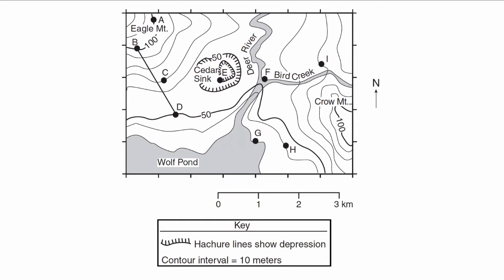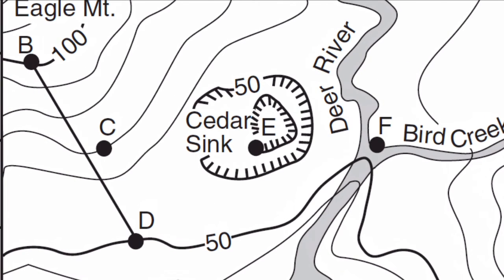Now depressions can also be shown, because not only does the ground always increase in elevation — sometimes the terrain goes the opposite way and gets deeper. To show depressions, topographic maps use hachure lines. Hachure lines have little dashes associated with them, and those will tell you that the ground is actually going down instead of up. There are really two things to always consider when you look for these features: hachure lines point towards the center of the depression, as shown by the arrows pointing toward the letter E.